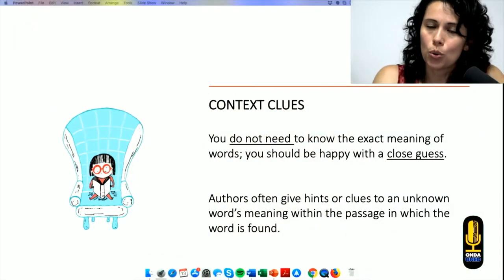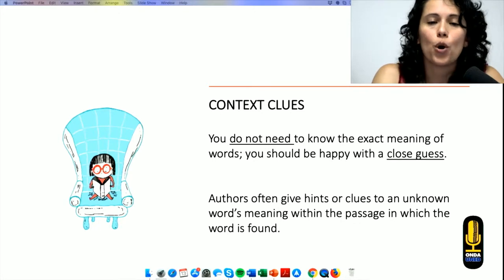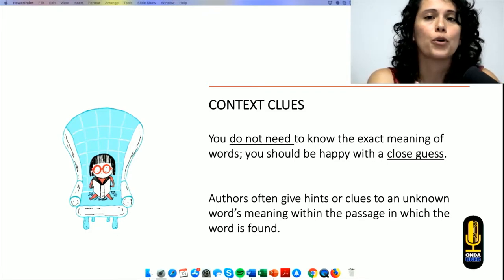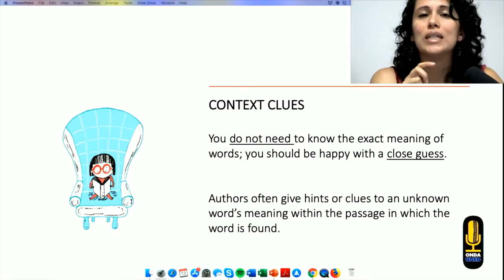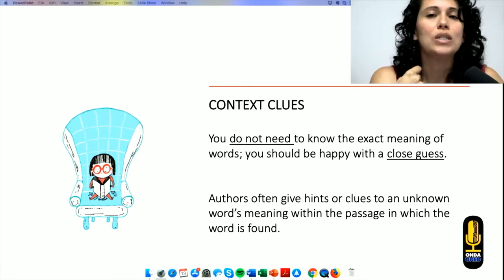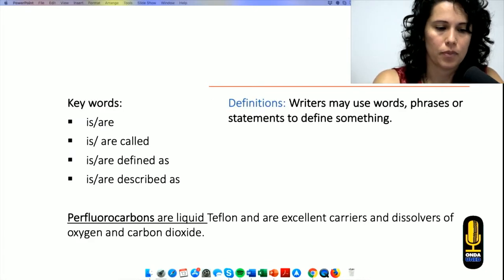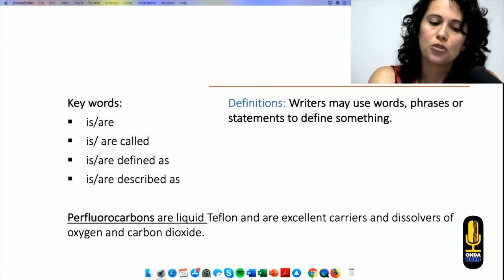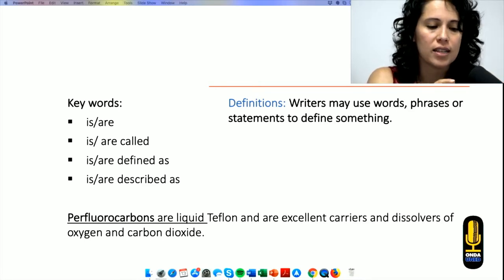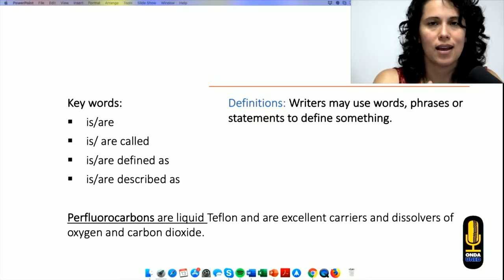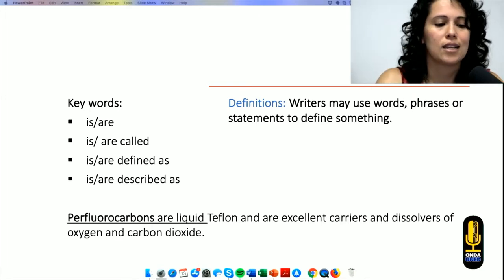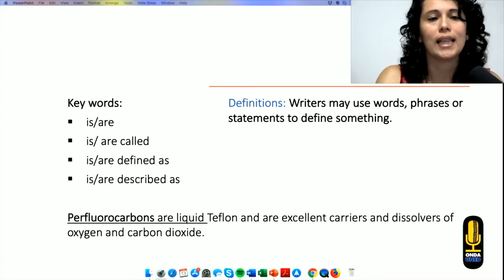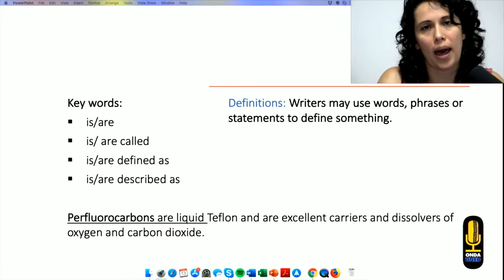Later on, I found context clues, which has been a great tool in this aspect. Now, you do not need to know the exact meaning of a word. Be happy with knowing a close guess. Authors usually, while they're writing, they give us clues of unknown words. We need to learn how to decode or understand what's behind their writing. We can start using definitions. Look for definitions. Writers may use words, phrases, or statements to define something. Imagine you see the word perfluorocarbons. I might not be knowing what it is. I continue reading. And what does the writer do? He writes a definition. So perfluorocarbons are liquid Teflon and are excellent carriers of dissolvers.